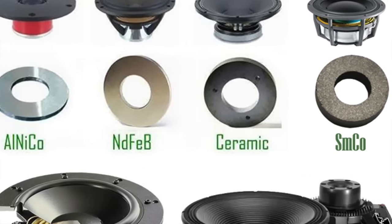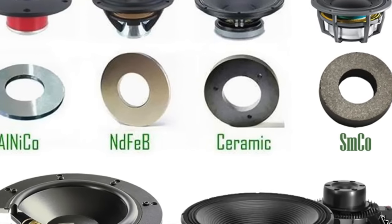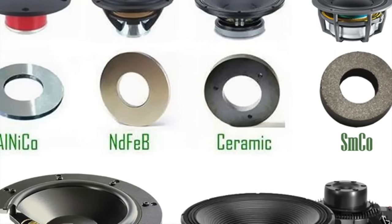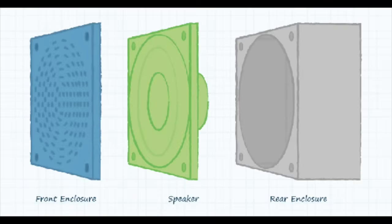The magnet's shape and size are carefully engineered to maximize its interaction with the voice coil. Another critical aspect of loudspeaker design is the enclosure, which houses all the internal components. The enclosure's primary purpose is to prevent sound waves from the back of the diaphragm from interfering with sound waves from the front. This interference can cause phase cancellation, where certain frequencies are diminished or canceled out, leading to poor sound quality.